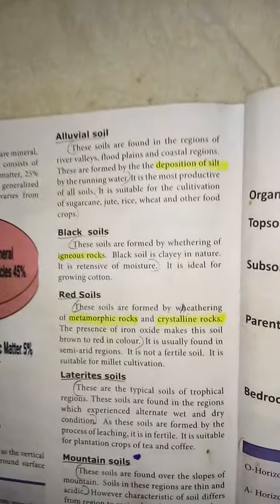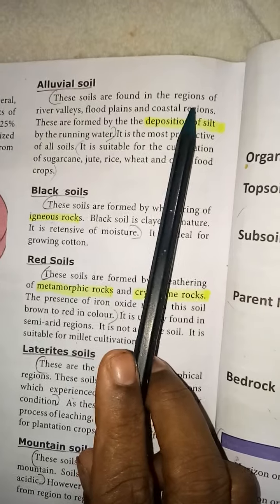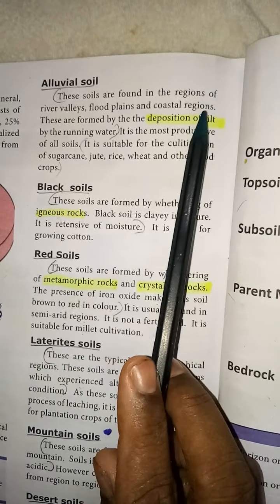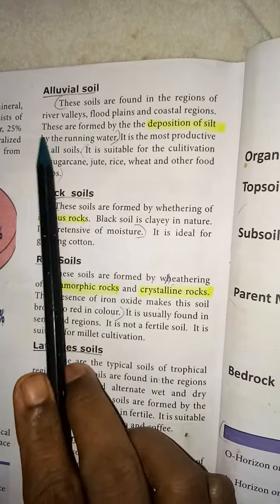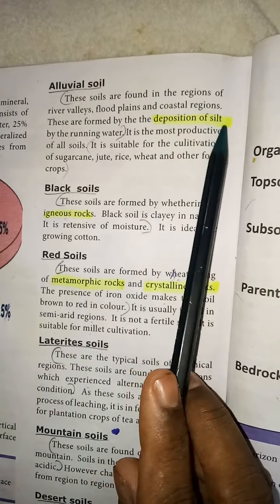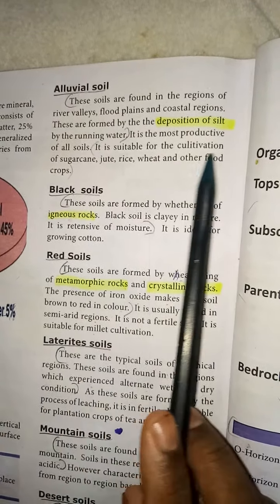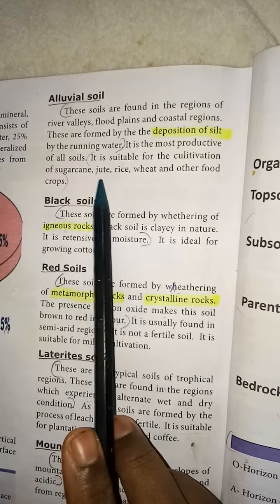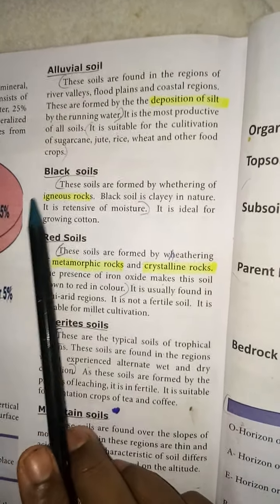Alluvial soil: these soils are found in the regions of river valleys, floodplains and coastal regions. They are formed by the deposition of silt by running water. Alluvial soil is suitable for cultivation of sugarcane, jute, rice, wheat and other food crops.